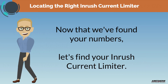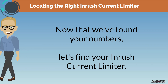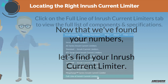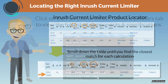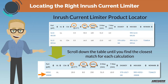Now that we've found the numbers, let's go find the inrush current limiter to match. You'll find our full line of inrush current limiters on our website as shown here. Simply click on the full line of inrush current limiters tab to display the component locator. Scroll down the table until you find a part that best matches your requirements for resistance, steady state current, and joules. Never select a part with numbers less than your results.